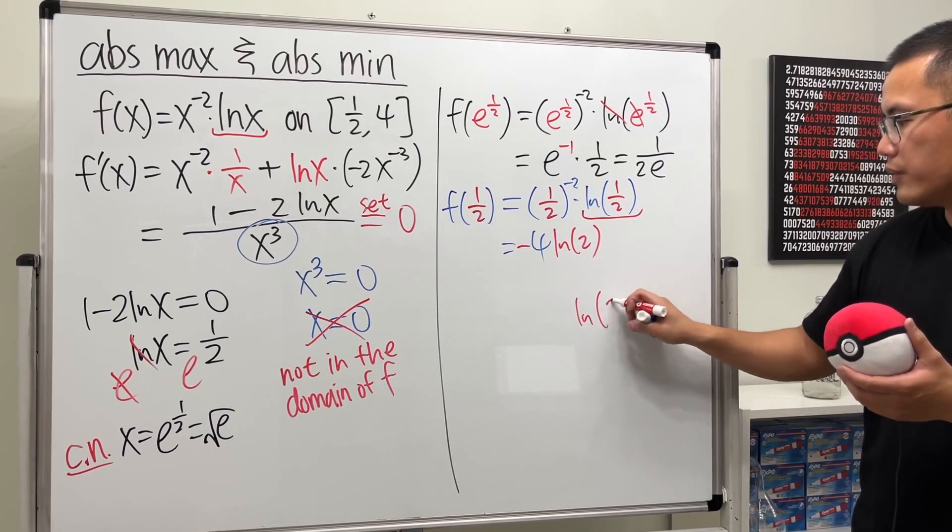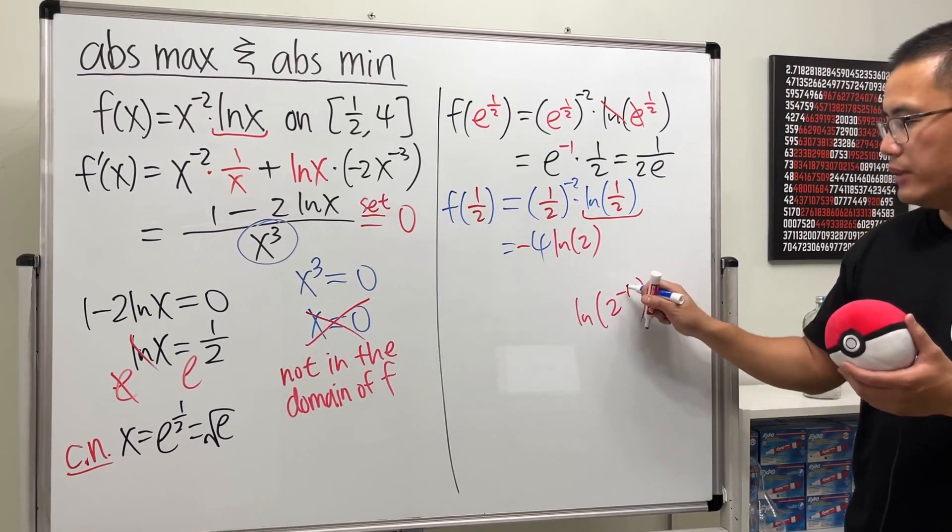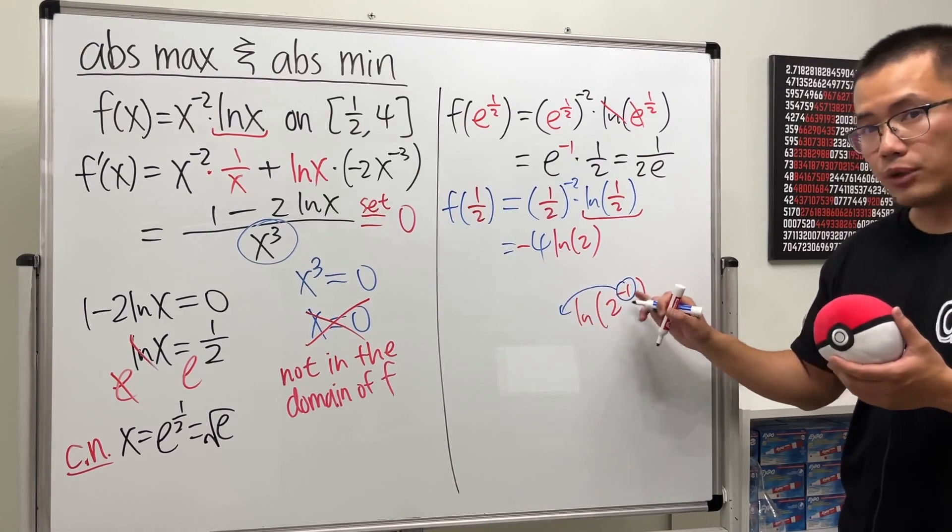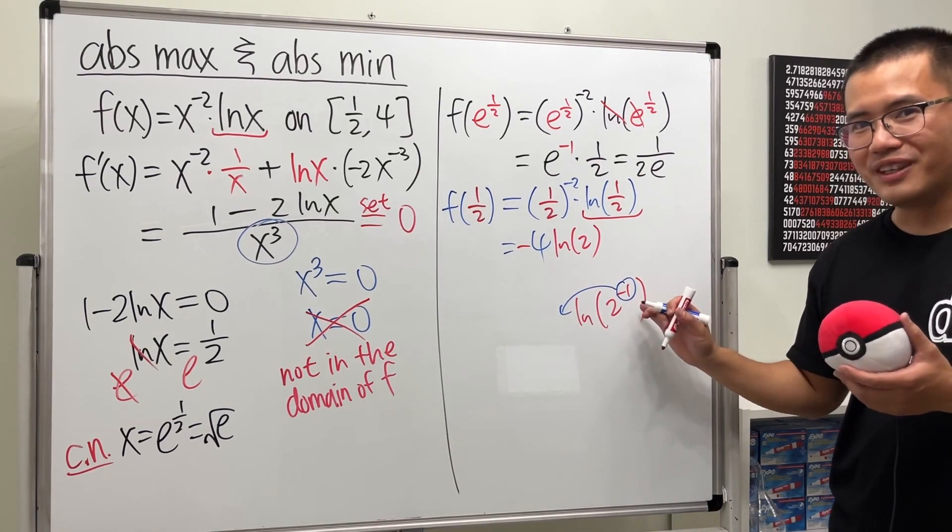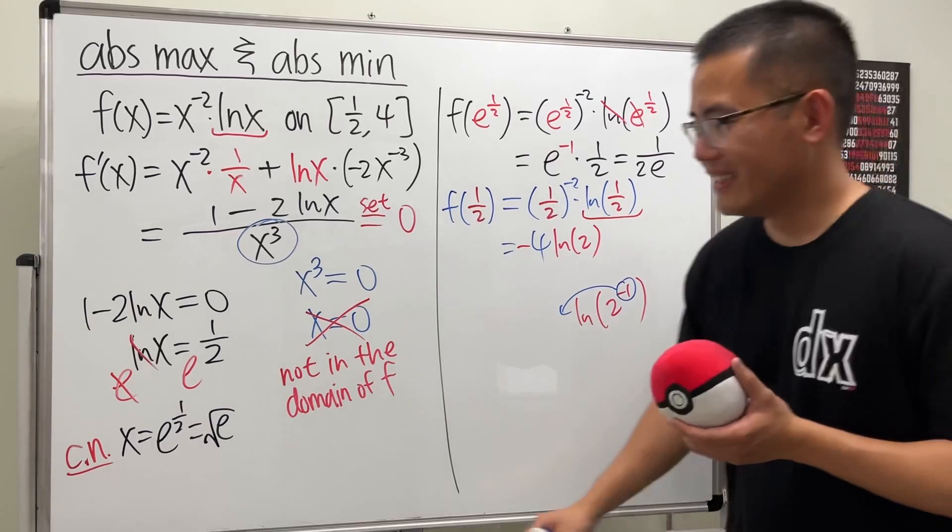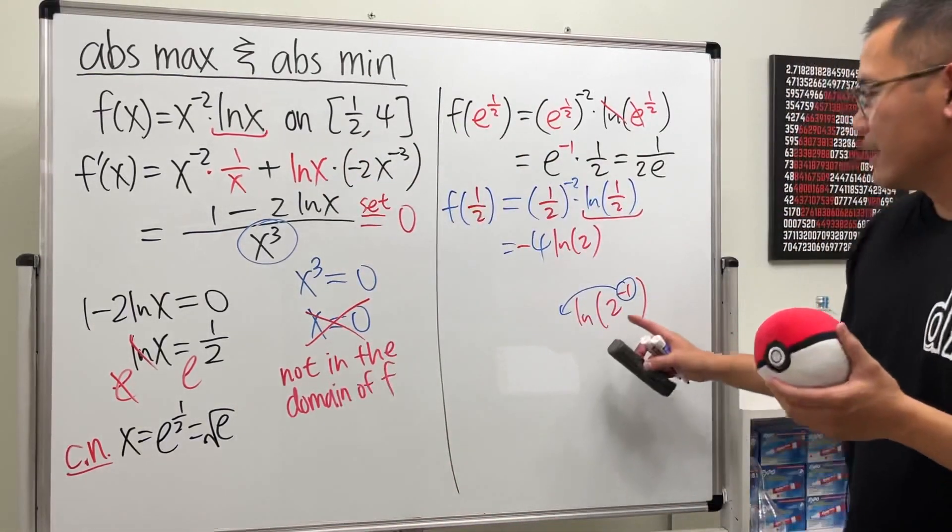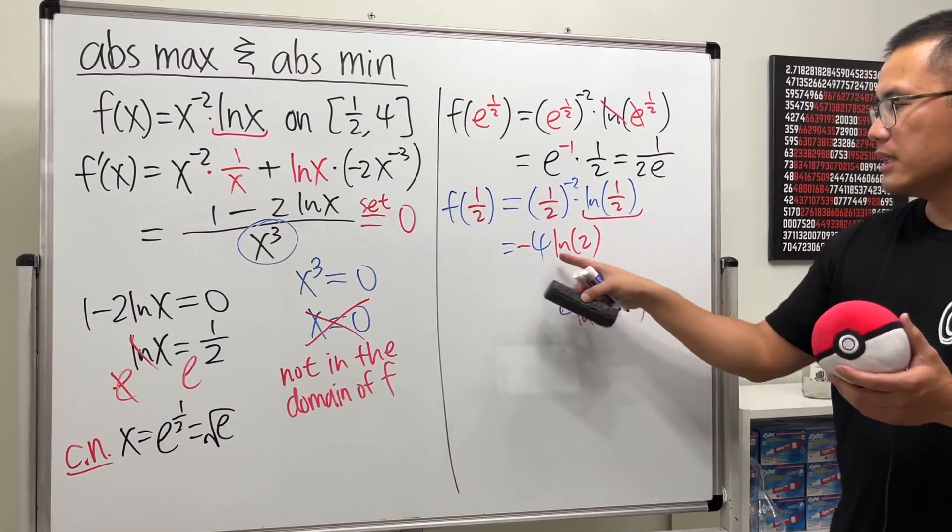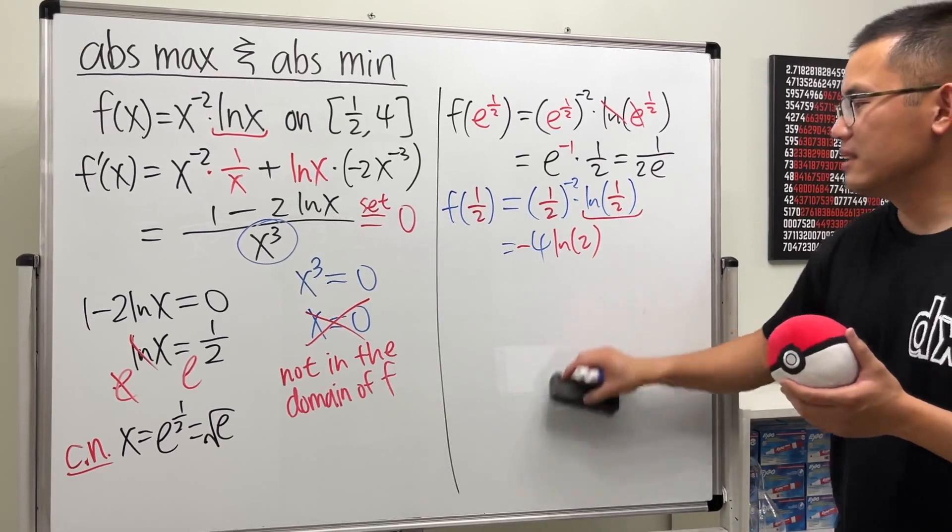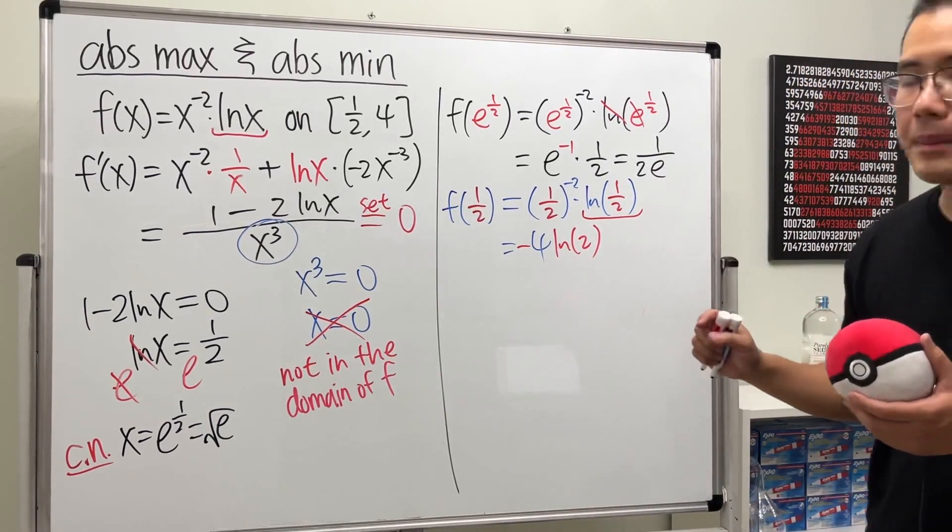You can look at this number as negative ln 2. Why? Because you can look at this as ln of 2 to the negative 1 power. And then you can put the power in the front, but don't mind as 1. We are not doing derivative here. This is just a log property. So that's why this is the same as negative ln 2. And in fact, this is a negative number. Just keep that in mind.